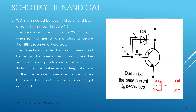For example, suppose the saturation voltage level is 5V. With Schottky TTL, we don't charge it all the way to 5V — we only charge it to 3V. So when switching off, we go from 3V to 0V instead of 5V to 0V, and this is why the circuit and gate speed increases.